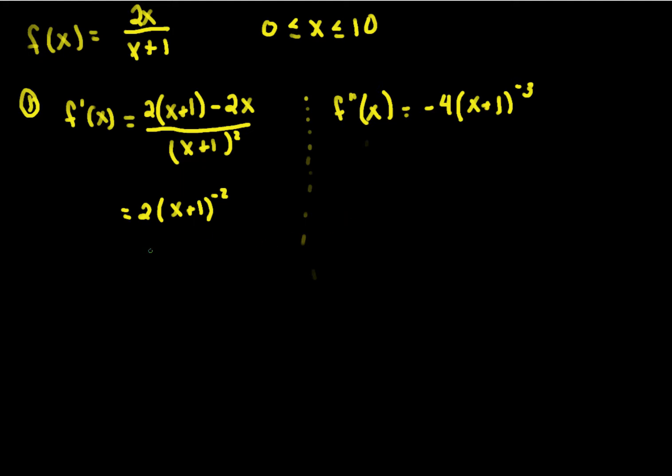And then we're asked, when does this equal 0 or doesn't exist? So notice this is a fraction, so it's never 0, but it doesn't exist. So f prime does not exist when x is equal to negative 1. But what's our domain? Our domain is x between 0 and 10, and so this is not in our domain. So there is no critical values. That's fine.